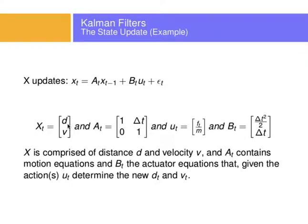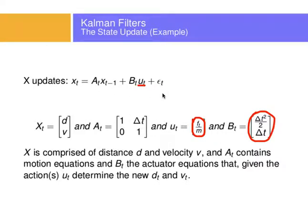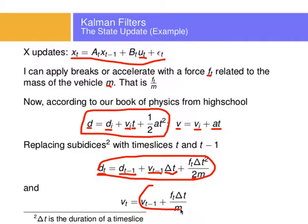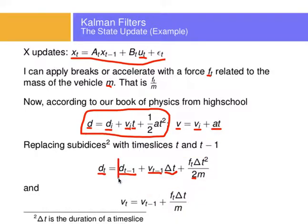One can put this in matrix form. If x_t is distance and velocity, and x_{t-1} is distance and velocity at time t minus 1, A_t is the motion matrix, u_t is the force or action, and B_t is the action matrix — if I put it all together and multiply these matrices, you should get the two motion equations: the distance update and the velocity update in matrix form.